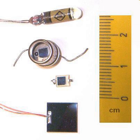A photodiode is a semiconductor device that converts light into an electrical current. The current is generated when photons are absorbed in the photodiode. Photodiodes may contain optical filters, built-in lenses, and may have large or small surface areas. Photodiodes usually have a slower response time as their surface area increases. The common traditional solar cell used to generate electric solar power is a large area photodiode.